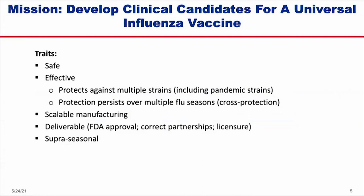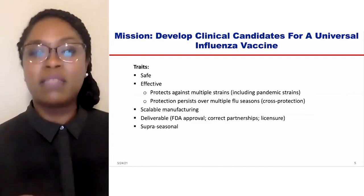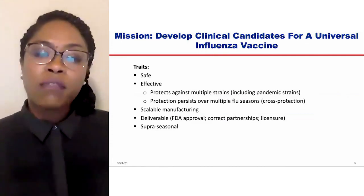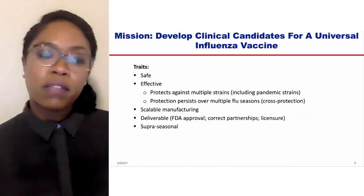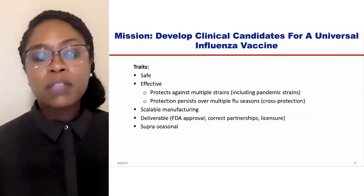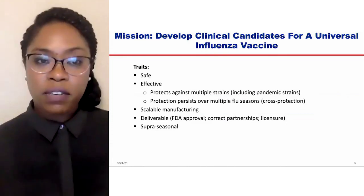These vaccines also need to be delivered with consistency and quality up to par, which requires FDA approval. The delivery itself would require correct partnerships, since neither the NIH nor the VRC can deliver such products to market. We also need appropriate licensure in place. And finally, there's an idea of being 'super seasonal,' which embodies all of these traits within the vein of pandemic preparedness — where we're able to very quickly deliver a scalable vaccine that meets all the criteria unexpectedly.